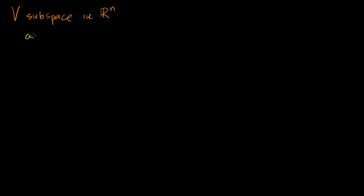Let's say that I have some set V that is a subspace in Rn. As a reminder, that's some subset of Rn where if I take any two members of that subset — let's say A and B, both members of my subspace — by the fact that this is a subspace, we know that A plus B is also in the subspace. This is closure under addition.